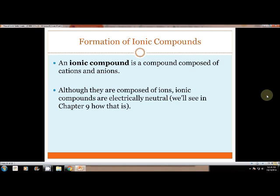To finish up chapter 7, we need to talk about ionic compounds. Ionic compounds are formed from cations and anions, the transferring of electrons. Although they're composed of ions, ionic compounds are electrically neutral, and we're going to deal with these again in chapter 9.